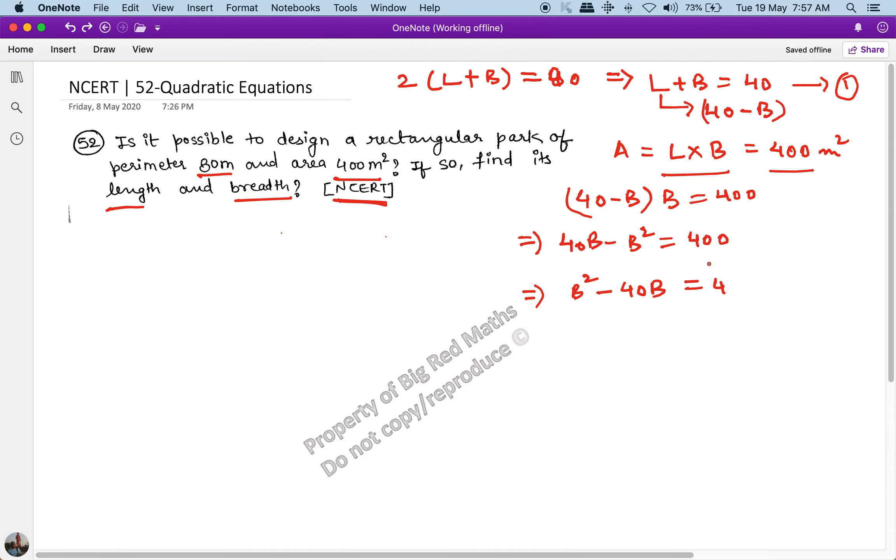If you look at this carefully, this is B² minus 20B minus 20B plus 400 equals 0. This implies B(B - 20) minus 20(B - 20) equals 0, which becomes (B - 20)(B - 20) equals 0.